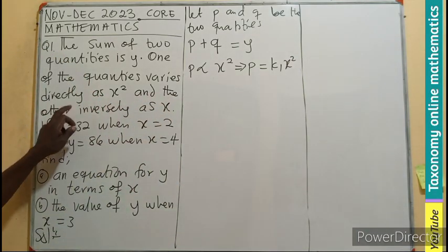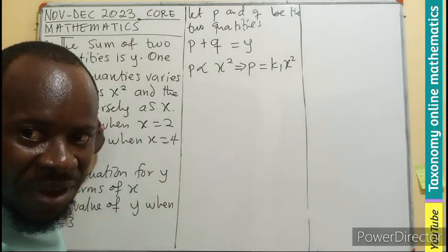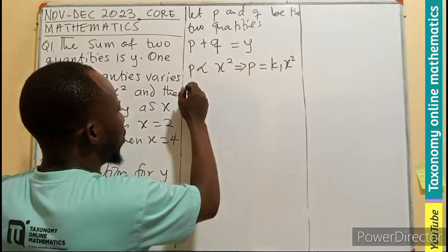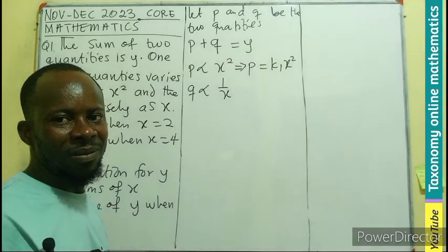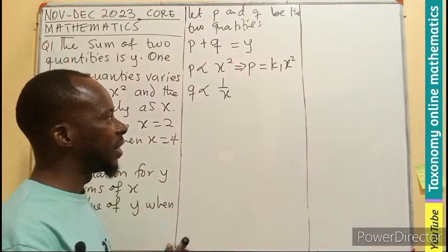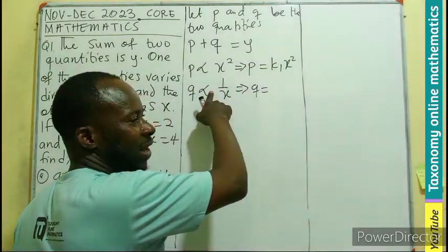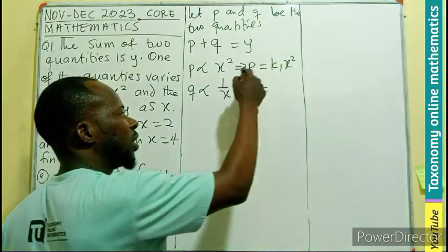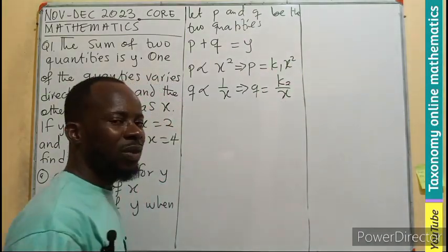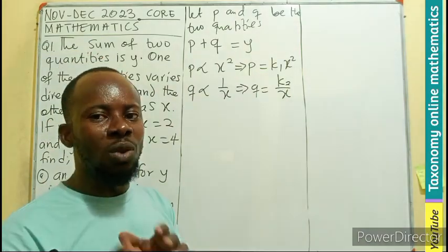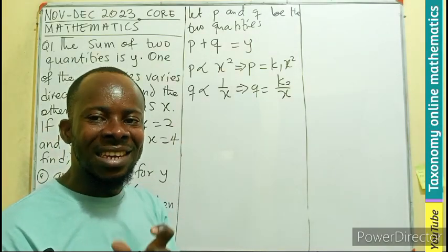Then the other quantity, which is Q, varies inversely. So this is inverse variation. So Q varies inversely as X. So writing this as an equation becomes Q equals K2 as a constant of variation, multiplying 1 over X, which becomes K2 divided by X. Don't forget, we are using two different constants of variation, because these are two different variations, direct and inverse.